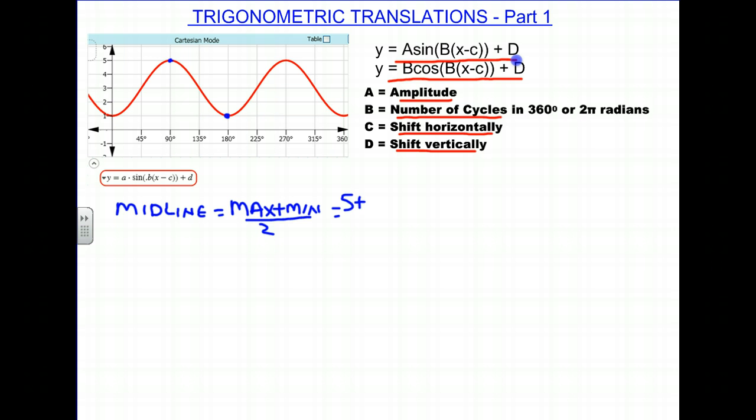So 5 plus 1 over 2 is 6 over 2, or 3. And that tells us that the equation of the midline is Y equal to 3. And the value of D is this value.